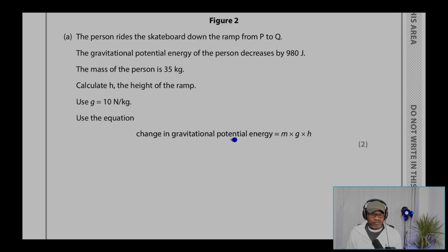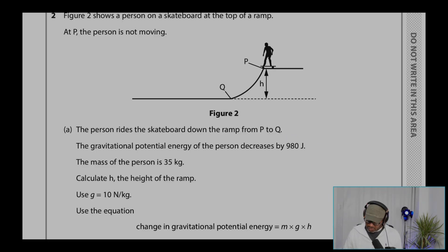Change in gravitational potential energy equals M times G times H. M is the mass, G is the gravitational field strength, H is the height. So we need to assign the energy values. That's the gravitational potential energy, 980. That's the mass and the height we're looking for.